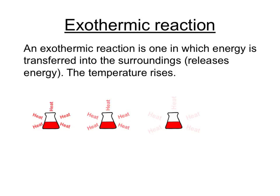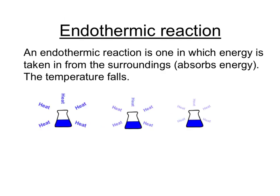In simple terms, exothermic reactions give out energy, usually in the form of heat, and exothermic reactions transfer that energy into the surroundings. This usually means that the temperature rises. Endothermic reactions are the opposite — these take in energy from their surroundings, which usually means that the temperature drops.